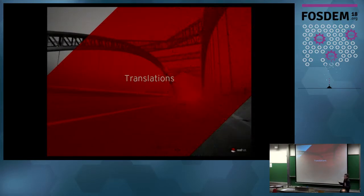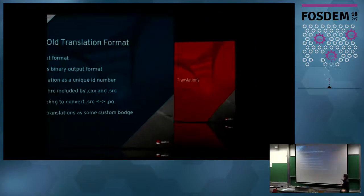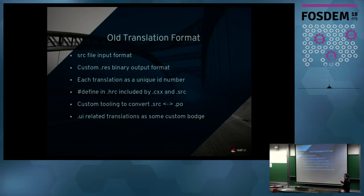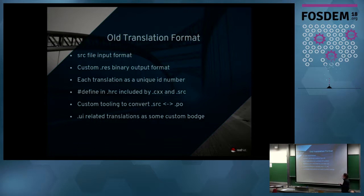Everything is now described in GTK-style file format but mapped at load time for our own widgets. Translations were in our own custom .src file format; the output was a .res binary file with each translation indexed by unique ID. They were converted to relatively standard .po files to go up to the website for translation, then converted back into our own custom format. When we converted to .ui files for dynamic layout, we had to keep a bodge to run those translations through the old system.